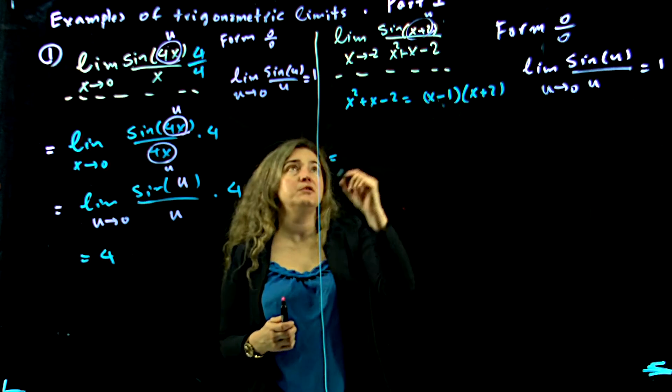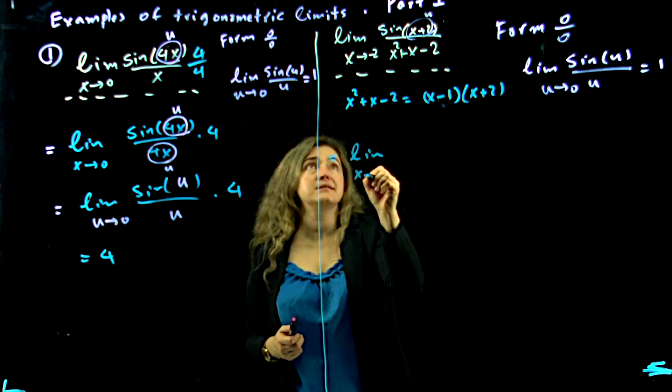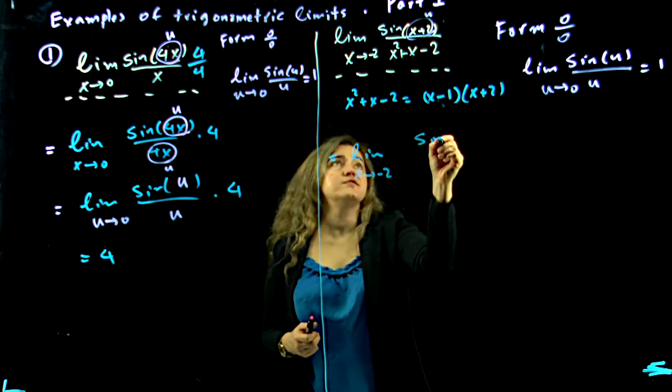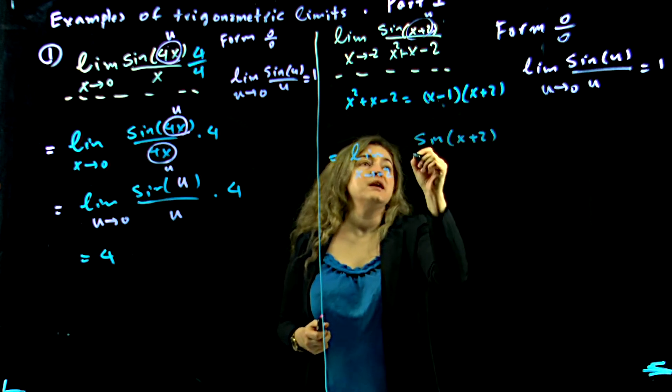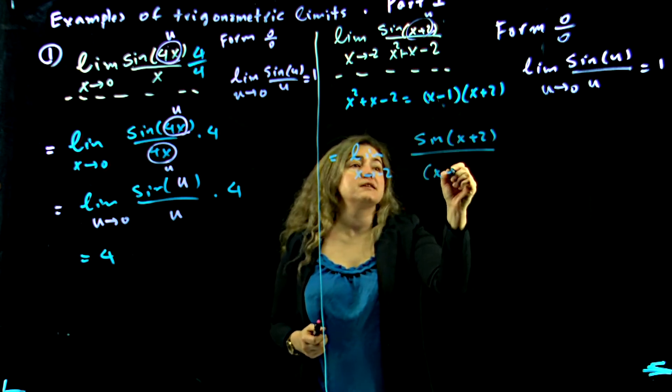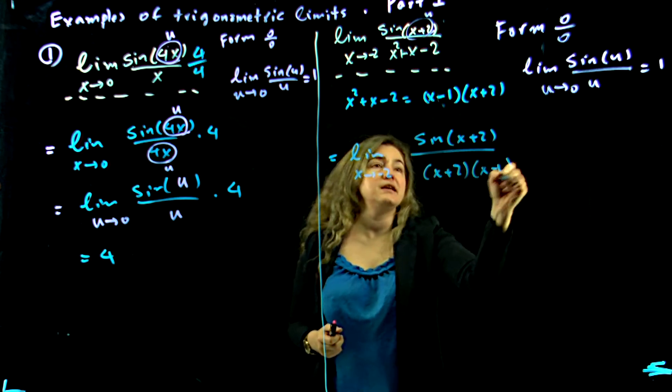So now I'm rewriting the limit. Limit as x approaches negative 2 of sine of x plus 2 divided by x plus 2 times x minus 1.